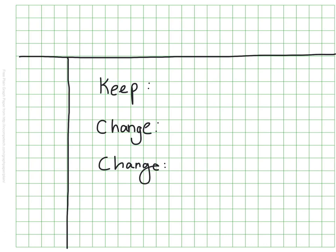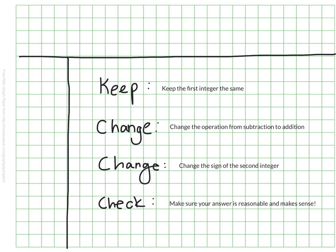And this is a handy memory trick. We keep the first integer the same, we change the operation from subtraction to addition, and then we change the sign of the second integer. And then we just add with our adding integer rules. But this is really only useful if we understand what's happening when we're working with negatives, which is why I didn't show this to you from the get-go. We always want to make sure we understand what we are doing with the integers. And when we get an answer, we want to make sure that the answer is reasonable and makes sense. So I'm going to add a fourth step: keep, change, change, check. Because we always want to check that our answer is reasonable and makes sense.